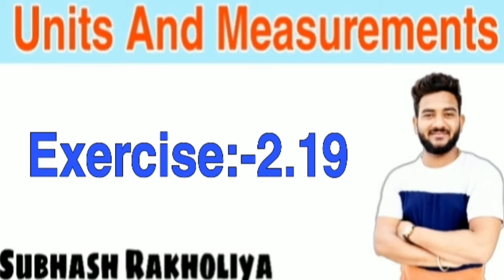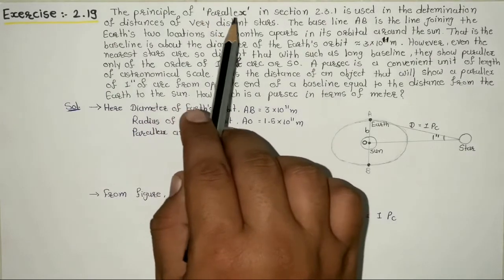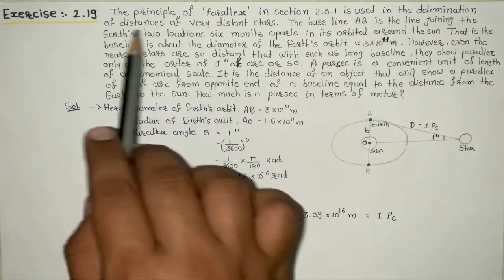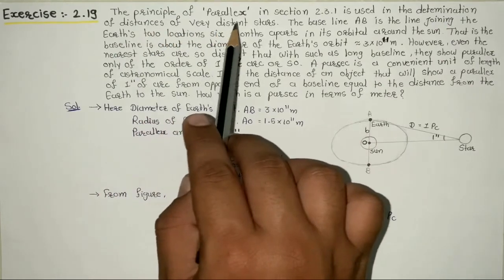Exercise Q2.19. The question is: a principle of parallax in section 2.3.1 is used in the determination of distances of very distant stars.